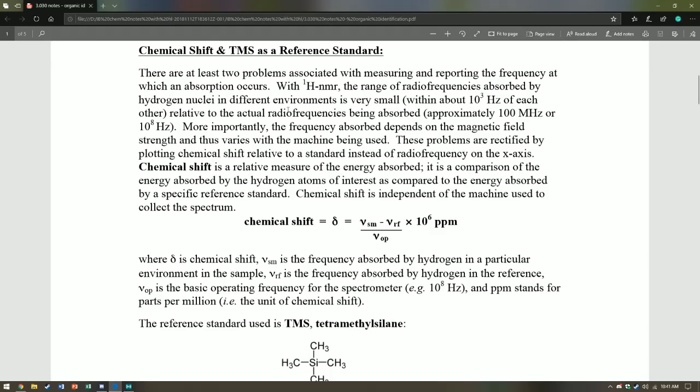There are at least two problems associated with measuring and reporting the frequency of absorption. With proton NMR, the range of frequencies is very small that it absorbs, so the frequency difference between the highest and lowest frequencies is only about 1000 Hz of each other, relative to the radio frequencies being absorbed, which are about 100 MHz, or 10 to the 8 Hz. 10 to the 3 and 10 to the 8, you can clearly see that 10 to the 3 is insignificant when compared to 10 to the 8, and therefore since that range is so small, it's hard to report frequencies.